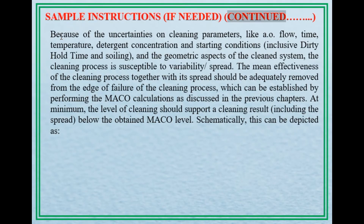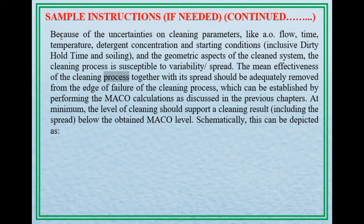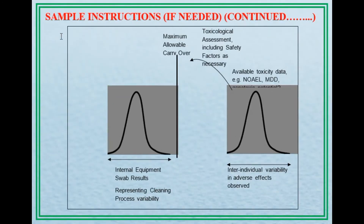Because of the uncertainties on cleaning parameters — such as flow, time, temperature, detergent concentration, starting conditions including dirty hold time and soiling — and the geometric aspects of the cleaned system, the cleaning process is susceptible to variability or spread. The mean effectiveness of the cleaning process together with its spread should be adequately removed from the edge of failure of the cleaning process, which can be established by performing the MAKO calculations as discussed in previous chapters. At minimum, the level of cleaning should support a cleaning result — including the spread — below the obtained MAKO level. Schematically, this can be depicted as shown.